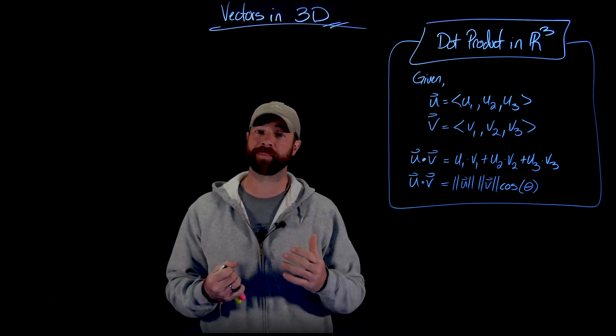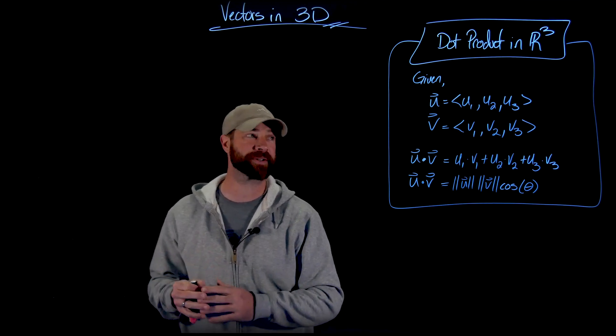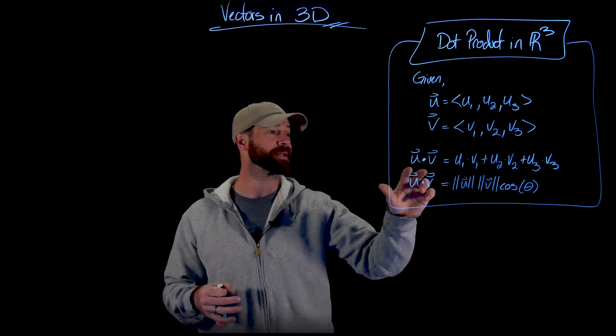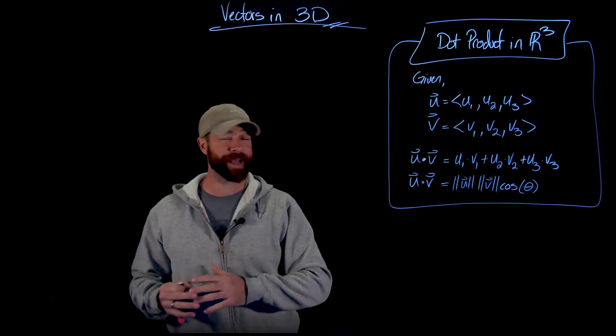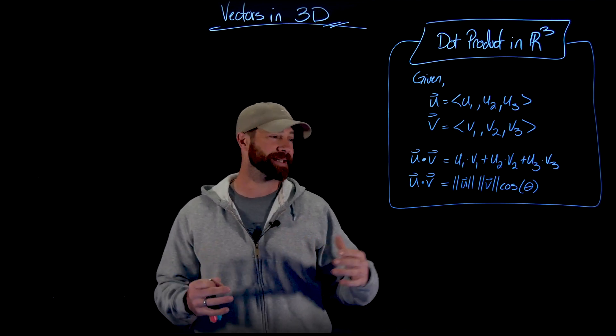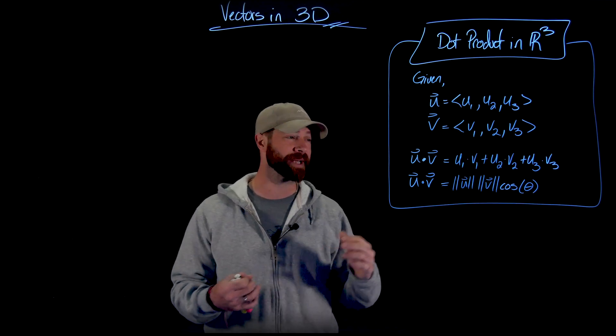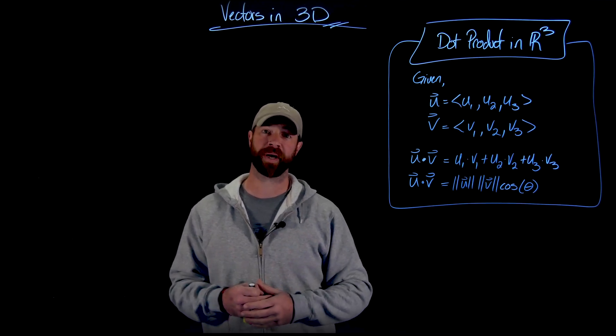First up, I want us to describe the dot product in three dimensions, which actually is exactly the same as two-dimensional vectors. All we do when we have two three-dimensional vectors to find the dot product, we multiply their component parts together. And in the same way, the dot product can also be found between two vectors by multiplying the magnitudes of those vectors and the cosine of the smallest angle between those two vectors.